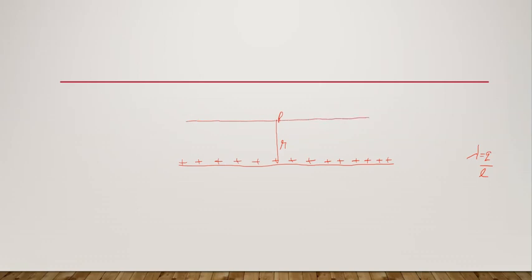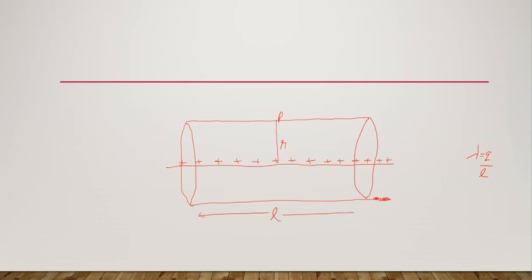We draw a cylinder at distance r from the line charge. This gives us a closed cylindrical surface of radius r and length l, closed at each end by plain parallel circular caps normal to the axis. All the points on the curved surface of this Gaussian cylinder are at the same normal distance r from the line charge.